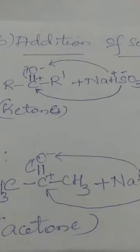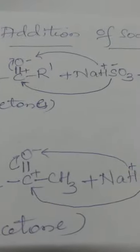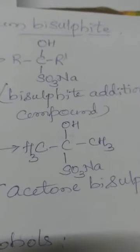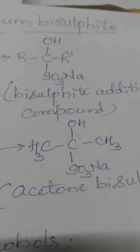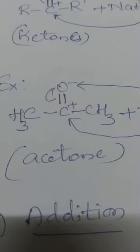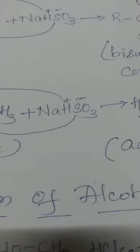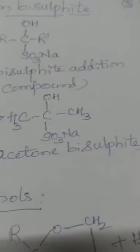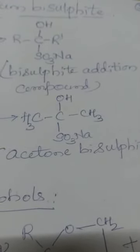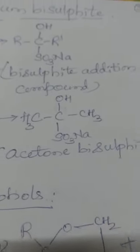O− picks up H+ to form OH, and −SO3Na forms a bond with carbon. The bisulfite addition compound, a white crystalline precipitate, has the formula R-C(R')(OH)(SO3Na). Taking the example of acetone (CH3-C=O-CH3) reacting with a saturated solution of NaHSO3, the product formed is acetone bisulfite, with CH3 groups in place of R and R'.